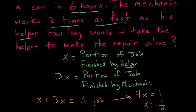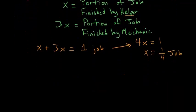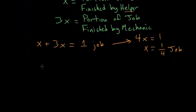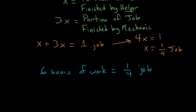For the helper, six hours of work is the same as one-fourth of the job. We can solve for one total job by multiplying each side by 4. So 24 hours of work equals one job.